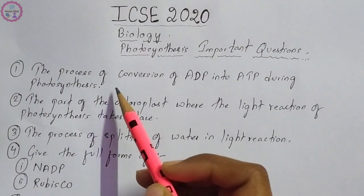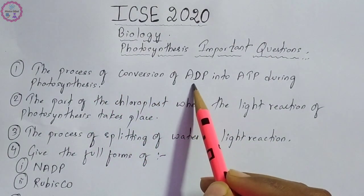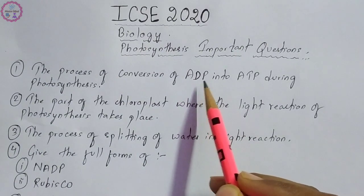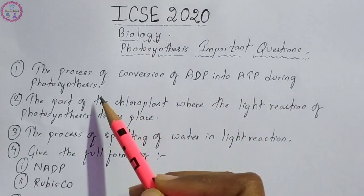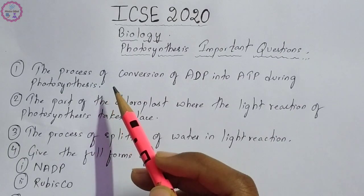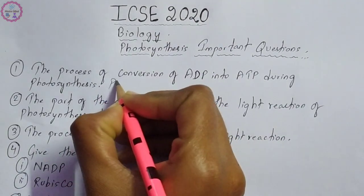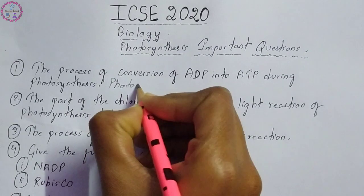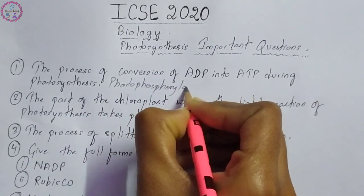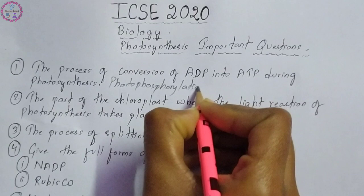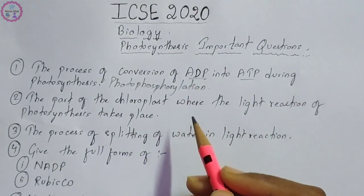The first question is name the following. The question is: the process of conversion of ADP (adenosine diphosphate) into ATP (adenosine triphosphate) during photosynthesis — what is this process called? It is known as photophosphorylation. The process of conversion of ADP into ATP is known as photophosphorylation.